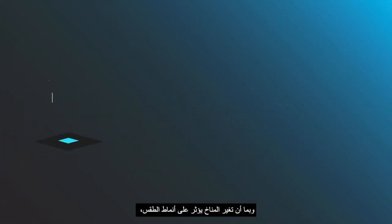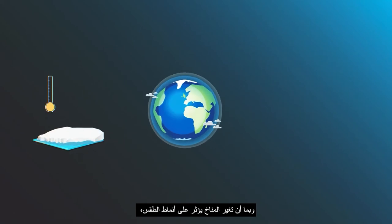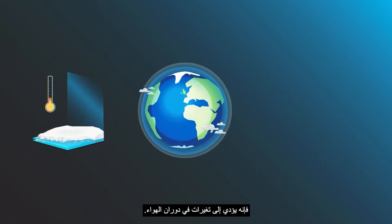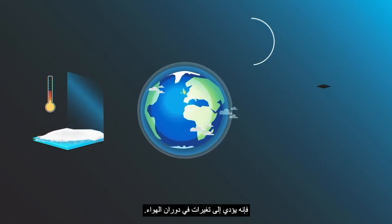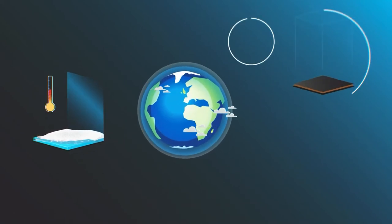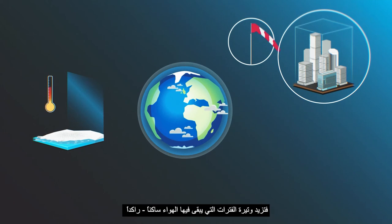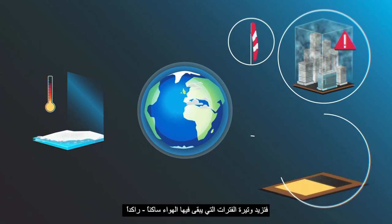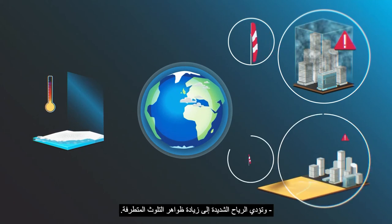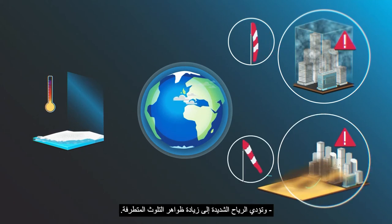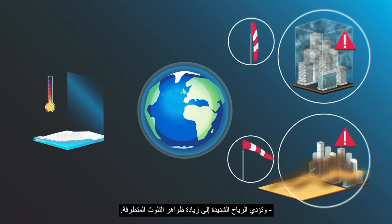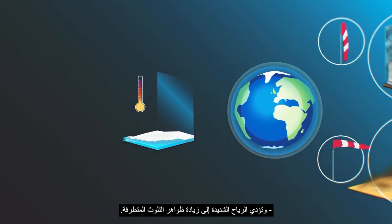As climate change impacts weather patterns, it leads to changes in air circulation. More frequent periods where the air remains still, stagnated, and extreme winds lead to more frequent extreme pollution events.